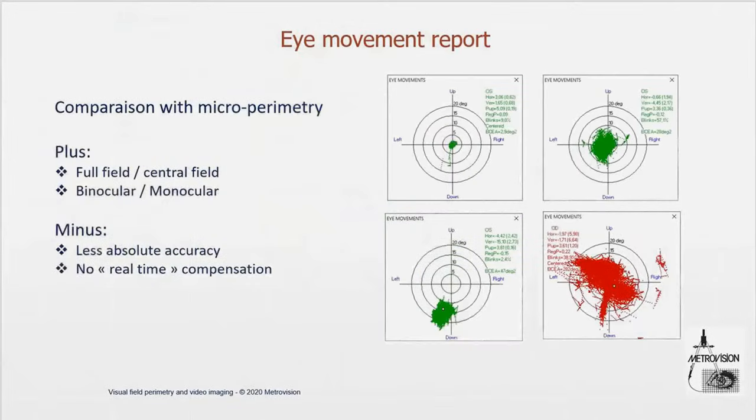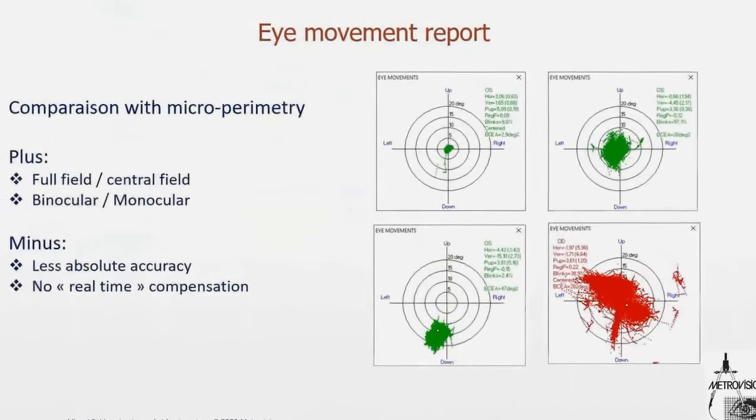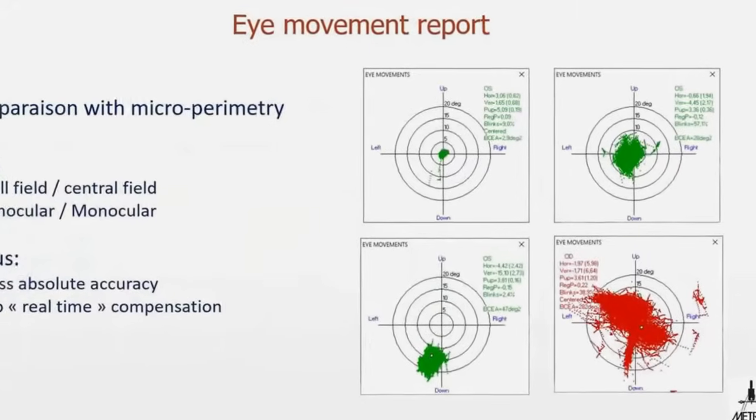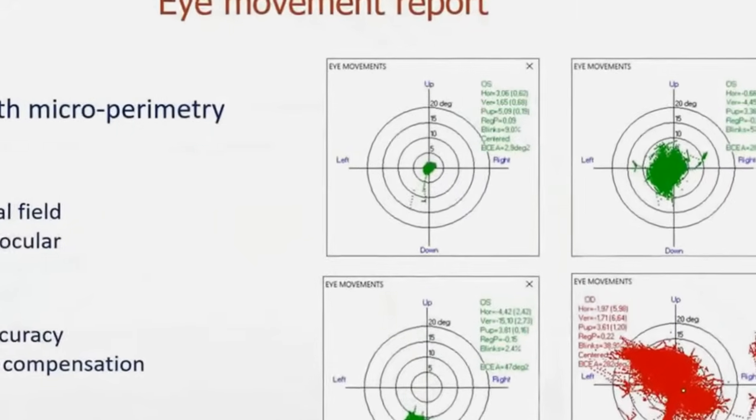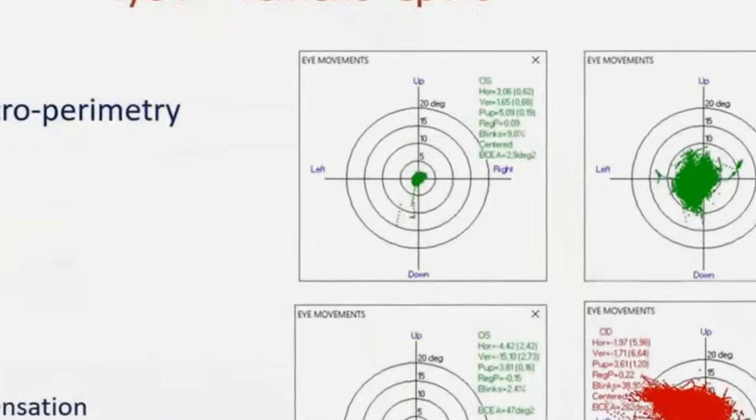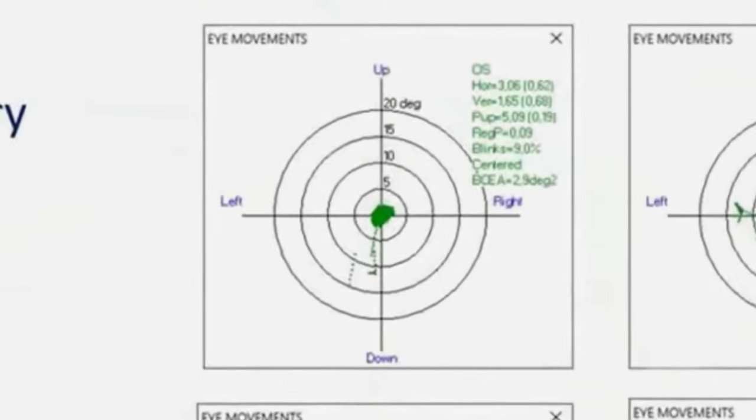Now you can see here four examples. One example with a good fixation in the center with a very stable fixation, 2.9 degrees, slow blink rate, 9%, a pupil size, average of 5 mm diameter.